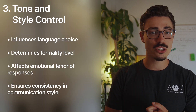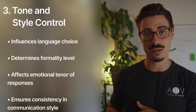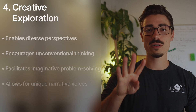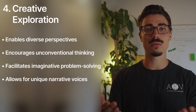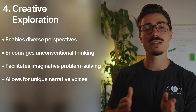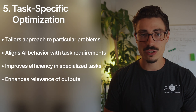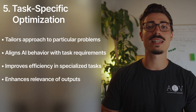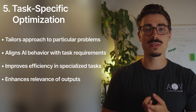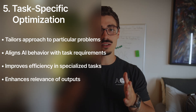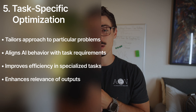Number three is tone and style control — they influence the language and communication style of the AI's response. Number four is creative exploration — personas enable diverse perspectives and unconventional thinking. Number five is task-specific optimization — personas can be tailored to suit particular tasks or problem-solving approaches.